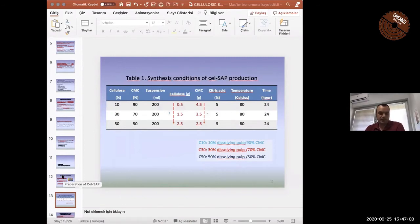We summarized in table one. We summarized synthesis conditions of cell SAP. The amount of cellulose and carboxymethyl cellulose were variables. Other reaction conditions were stable.